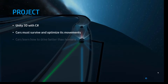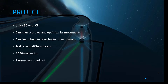This project is made in Unity 3D with the programming language C#. The idea is that cars must survive during the entire track and optimize their movements to be faster and not collide with the track or other cars. The aspiration is to learn better than humans how to drive, but this is very complex because we have a lot of inputs and situations.